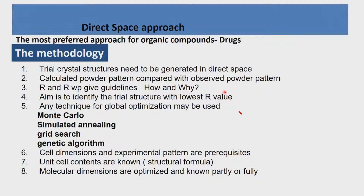This R-factor search was already practiced in single crystal structure determination in earlier days, before direct methods and Patterson methods took over. The contribution of G.N. Ramachandran in this area has to be remembered. He did what is known as an R-factor search using the vector search methodology — using the Patterson function, he identified the lowest R value which could give the trial structure — and then did the routine structure refinement. This was with single crystal data.